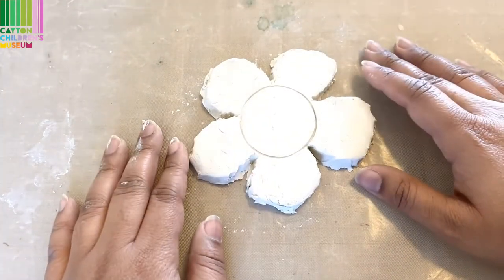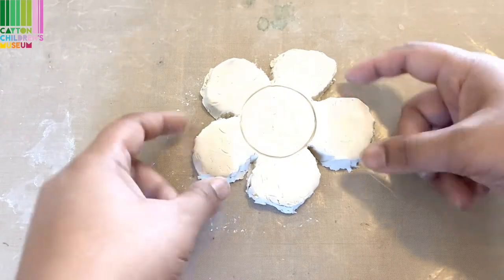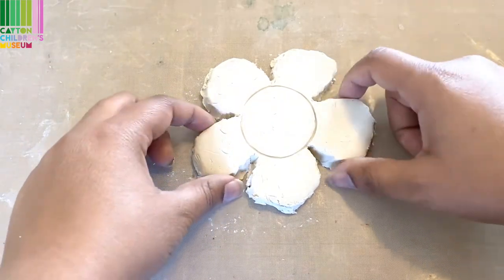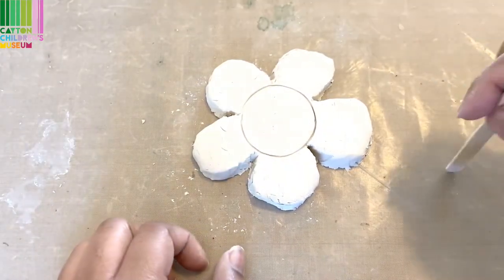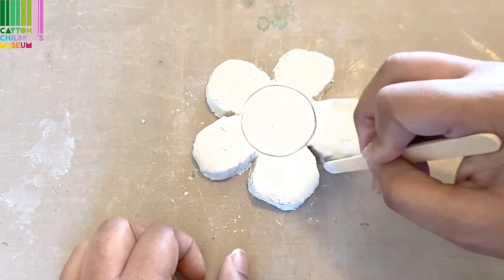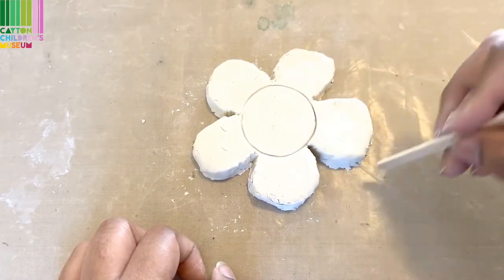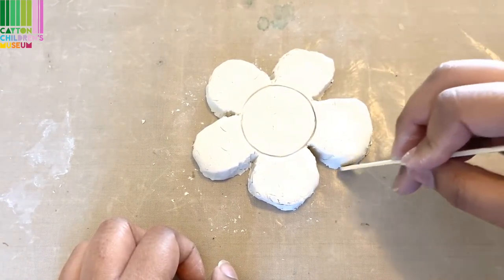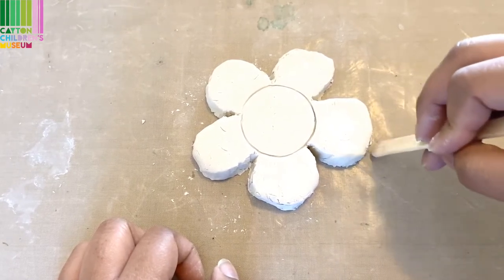Now that we've gotten our shape cut out, I'm just going to start to smooth the sides out. Just using my toothpick to kind of push those little pieces of clay that are frayed out back into the main shape.